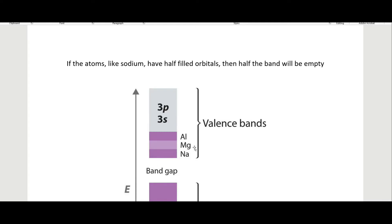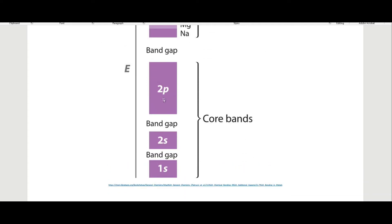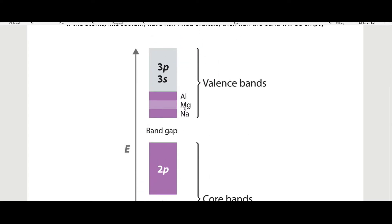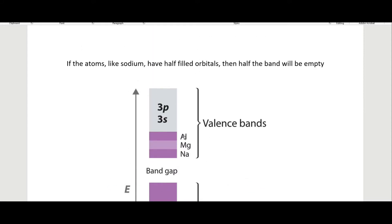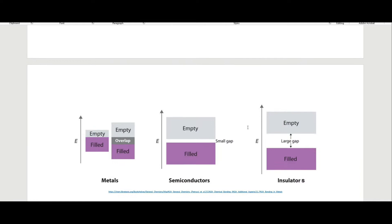You can see that sodium only fills this band up a little bit, magnesium a bit more since it has an extra electron, and aluminum a little more still. These are all in the same period on the periodic table, each with one extra electron. The core bands down here — those atomic orbitals — are not contributing to the bonding in a chunk of pure sodium, magnesium, or aluminum.